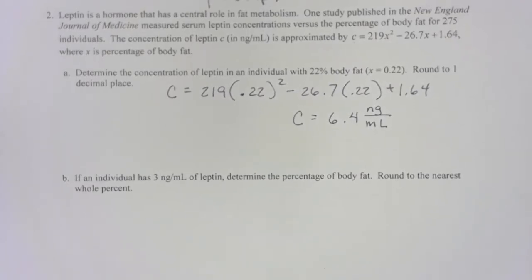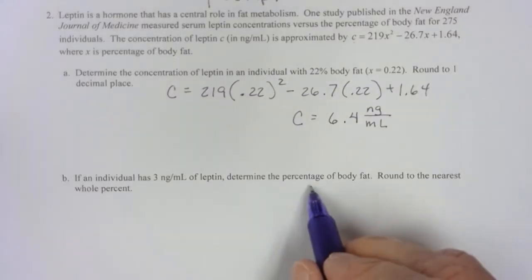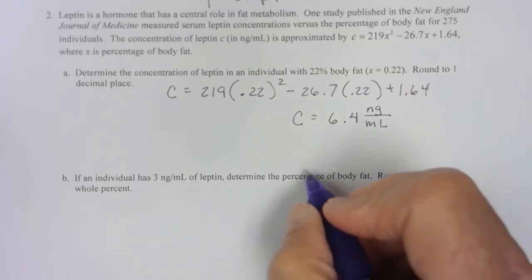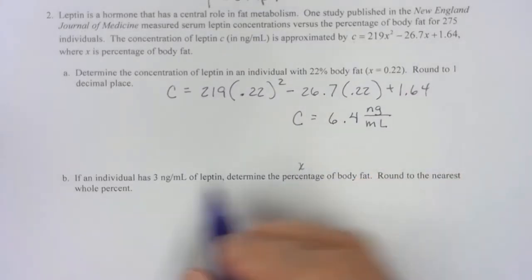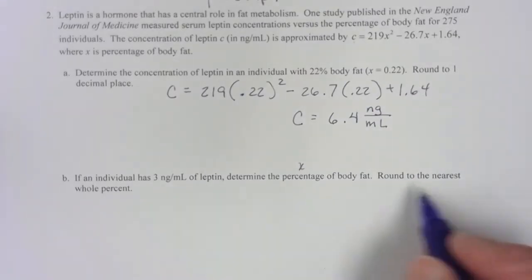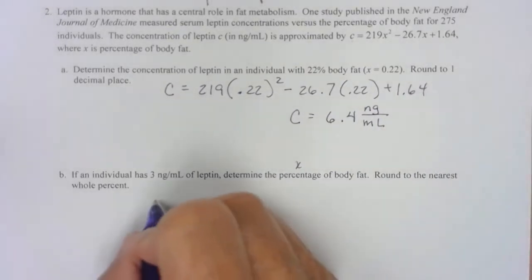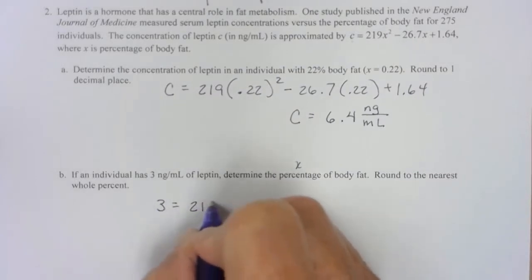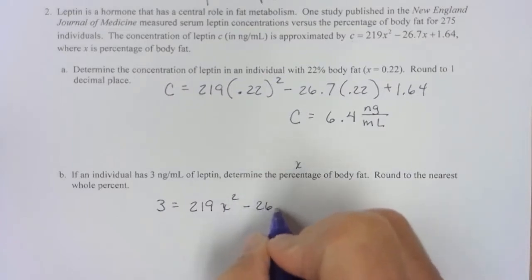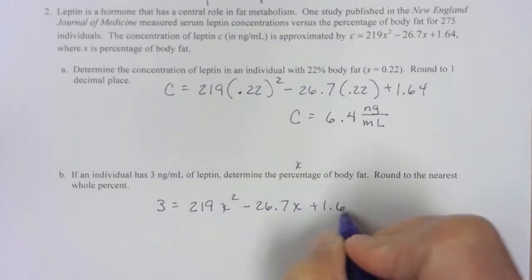If an individual has 3 NG per milliliter of leptin, determine the percentage of body fat. So for us to determine the percentage of body fat, that is x, so we have to find that. They're giving us C. Round to the nearest whole percent. I'll worry about that here in a minute. So I'm going to have 3 is equal to 2.19 x squared minus 2.7 x plus 1.64.